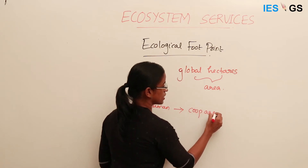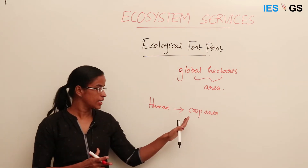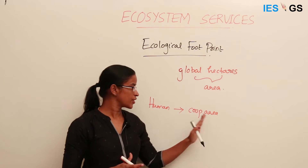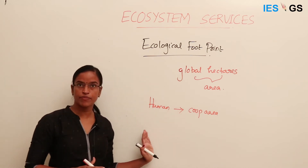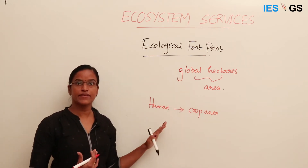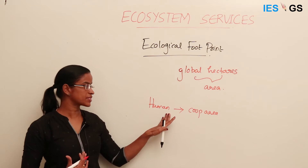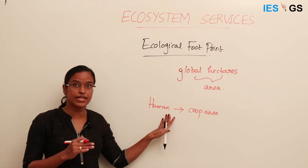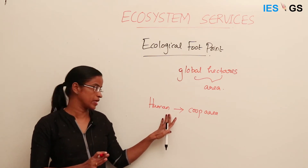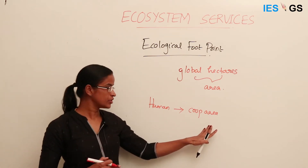This much crop area is needed to support a human being from birth to death given his lifestyle. Lifestyle determines the ecological footprint — that is an important point to note.